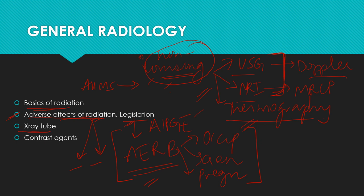The next important topic is the X-ray tube. The various parts — what constitutes the cathode, the anode, what is thermionic emission, what is the anode heel effect — are all important questions. What is a focal spot and what is its size are also important questions that have come in past examinations from X-ray tube.